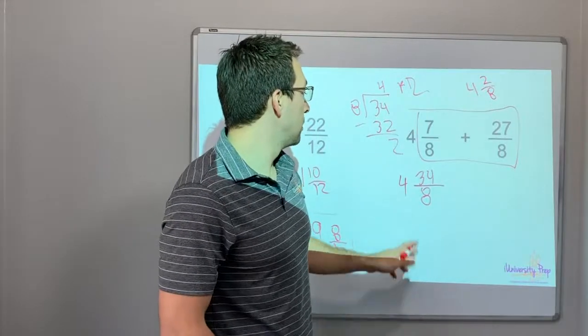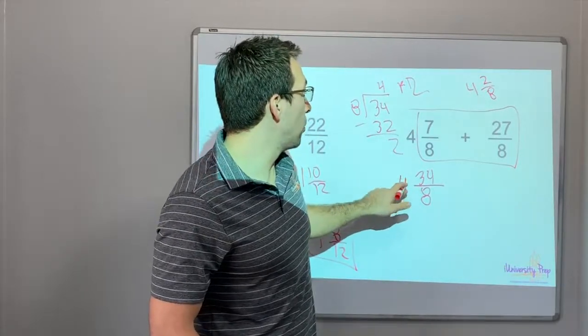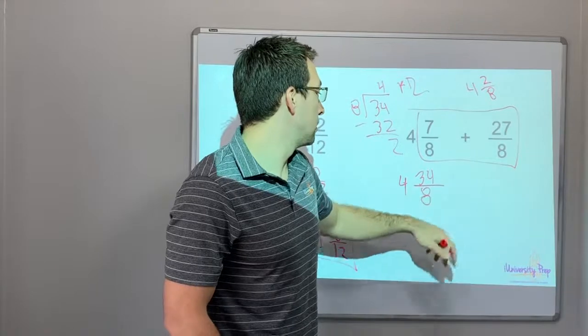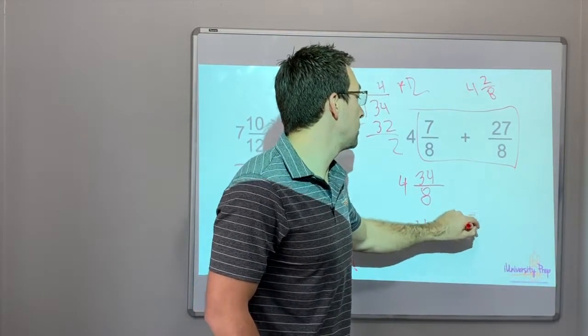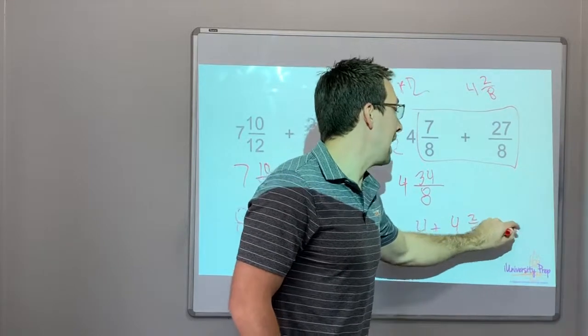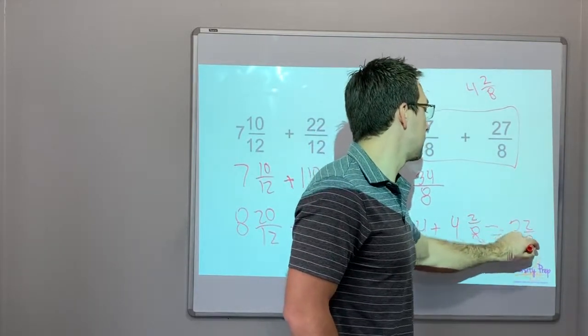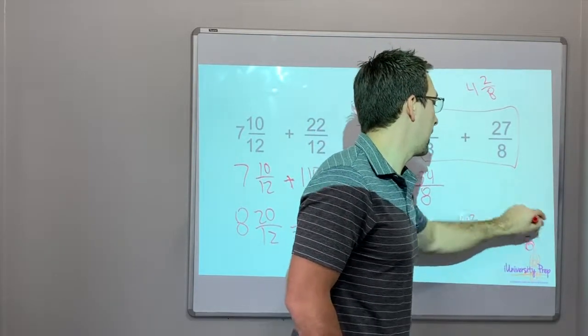So what is 4 plus 4 and 2/8? 4 plus 4 and 2/8 equals 8 and 2/8. And that is our answer.